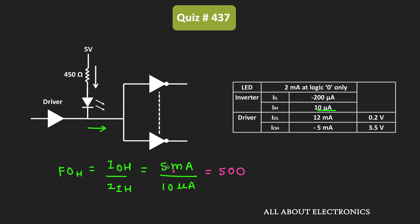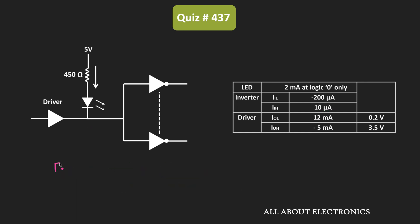That means the high state fanout for this driver is equal to 500. So similarly, let us find the low state fanout for the driver. The low state fanout can be given as IOL divided by IIL. But here at the output, this LED is also connected with the driver. And we have been given that when the output of the driver is low, then this LED is drawing 2mA of current. And because of this current, we also need to modify the existing equation.